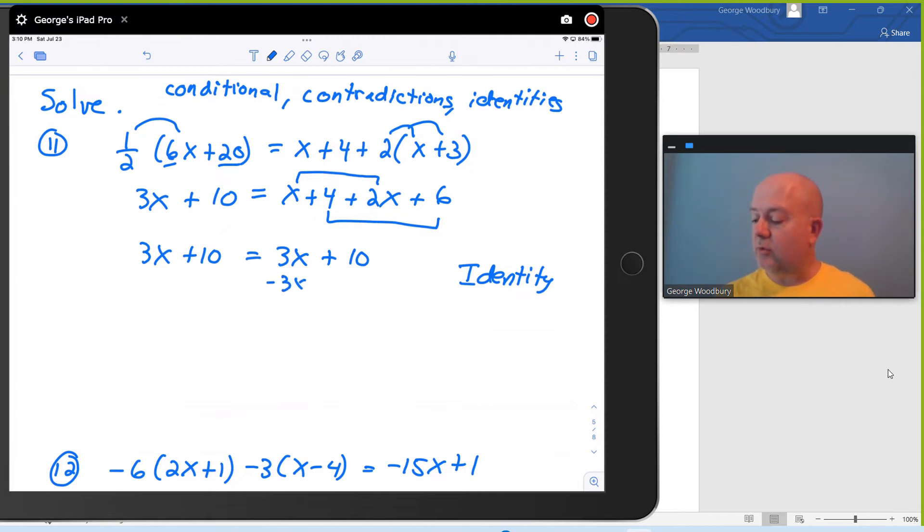So I'm going to subtract 3x from the right and also from the left. And when I do that, on the left-hand side, 3x minus 3x is 0. That leaves me just 10. On the right side, 3x minus 3x is still 0. That leaves me just 10 there as well. And I'm left with an equation that has no variables in it. And that's how I know that I have an unusual equation. It's either going to be a contradiction or an identity.